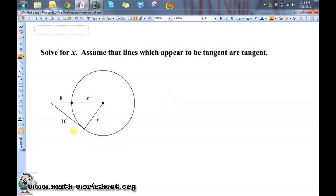Okay, since we're supposed to assume that lines that appear tangent are in fact tangent, then that means that I can assume that this right here is a right angle, because that line looks tangent, which means that this triangle is a right triangle.